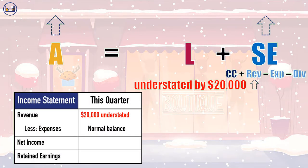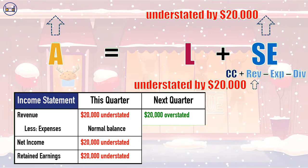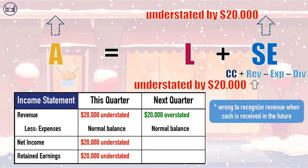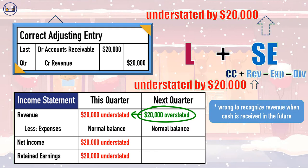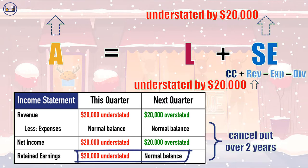Understating revenue by $20,000 will cause net income to be understated by $20,000 this quarter, which causes the ending balance in retained earnings for the quarter to also be understated by $20,000. Next quarter, when Muffintop receives cash from Mooses with Cabooses, they'll remember to credit their revenues for $20,000, causing revenue to be $20,000 higher than it should have been, because this $20,000 should have been recorded last quarter according to accrual-based accounting. So revenues for next quarter will be overstated by $20,000, causing net income to be overstated by $20,000 as well, wiping out the impact on retained earnings by the end of next quarter.